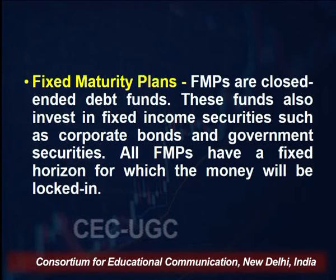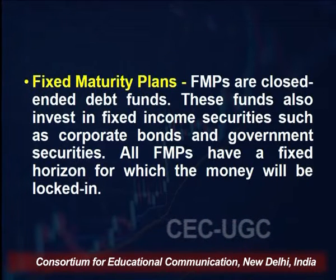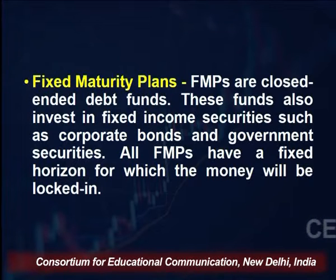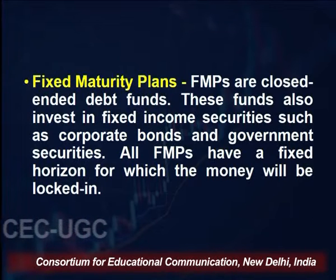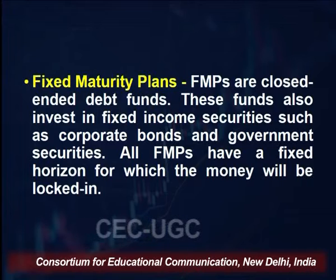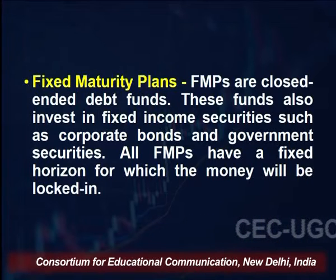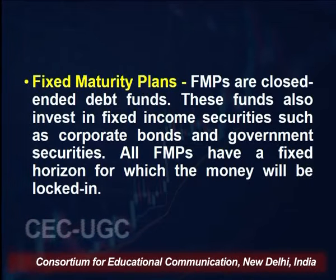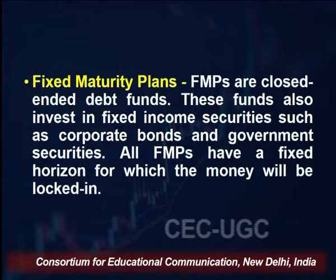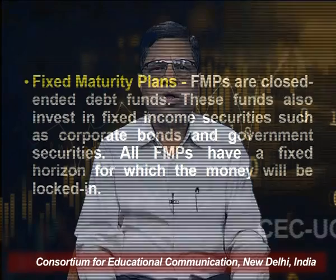Fixed maturity plans are closed-ended debt funds. Under a fixed maturity plan, the fund manager invests in bonds and debt instruments with a fixed, shorter-duration maturity. These funds invest in fixed income securities such as corporate bonds and government securities. All fixed maturity plans have a fixed horizon for which the money is locked in — for example, 3 years or 5 years.